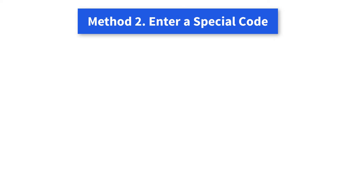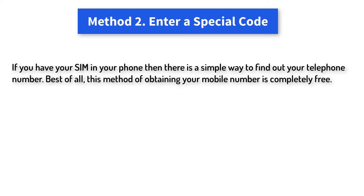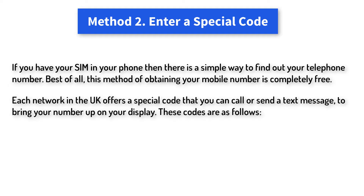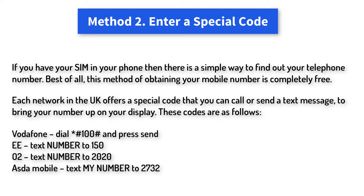Method 2: Enter a special code. If you have your SIM in your phone, there is a simple way to find out your telephone number. Best of all, this method of obtaining your mobile number is completely free. Each network in the UK offers a special code that you can call or send a text message to, to bring your number up on your display. If you are terrible at remembering your mobile number, you can save this special code in your contacts.